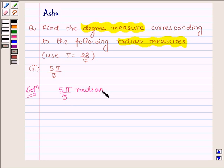and we have to find its degree measure. Now since π radian is equal to 180 degrees, therefore 1 radian is equal to 180 degrees upon π.